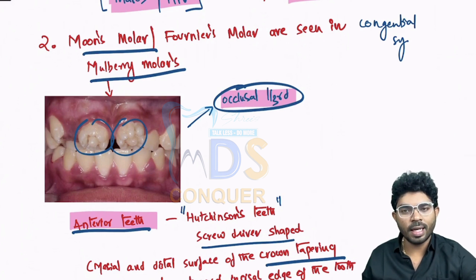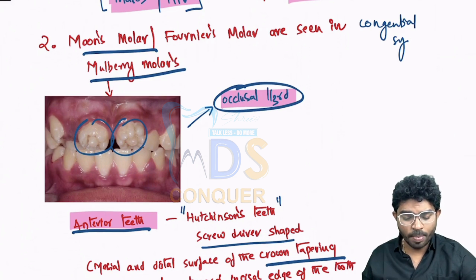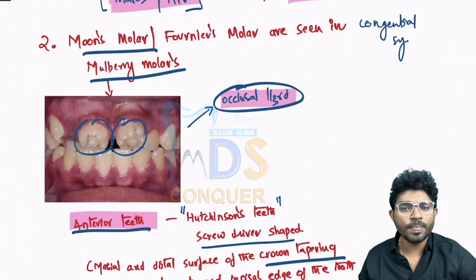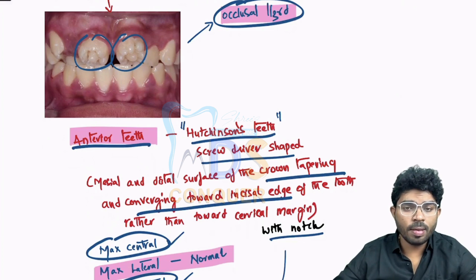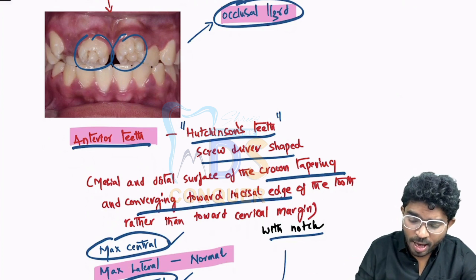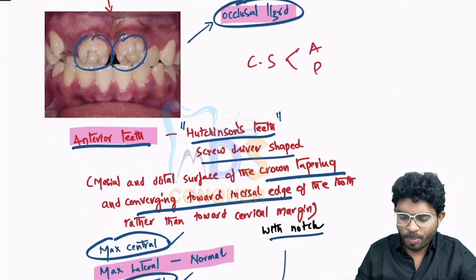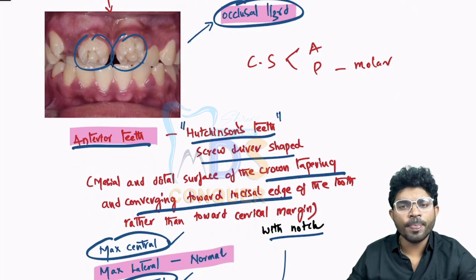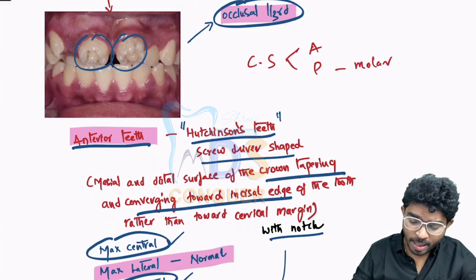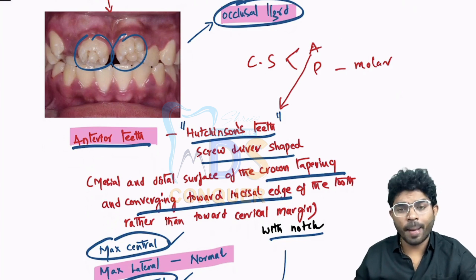Please also answer: what is Hutchinson pupil? In congenital syphilis, the occlusal one-third is mainly modified. You will have modification of both anterior teeth as well as posterior teeth. The posterior teeth — the molars — are called mulberry molars or Moon-shaped molars, where the occlusal one-third is affected. The anterior teeth are called Hutchinson teeth — regularly screwdriver-shaped incisors seen with an incisal notch.